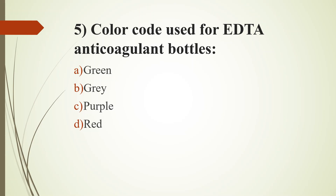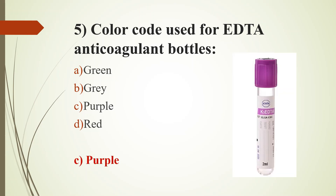Fifth question. The color code used for EDTA anticoagulant bottles is: Option A, Green; Option B, Grey; Option C, Purple; Option D, Red. The answer is Option C, Purple. The EDTA tube has a purple color top. EDTA stands for ethylene diamine tetra-acetic acid.